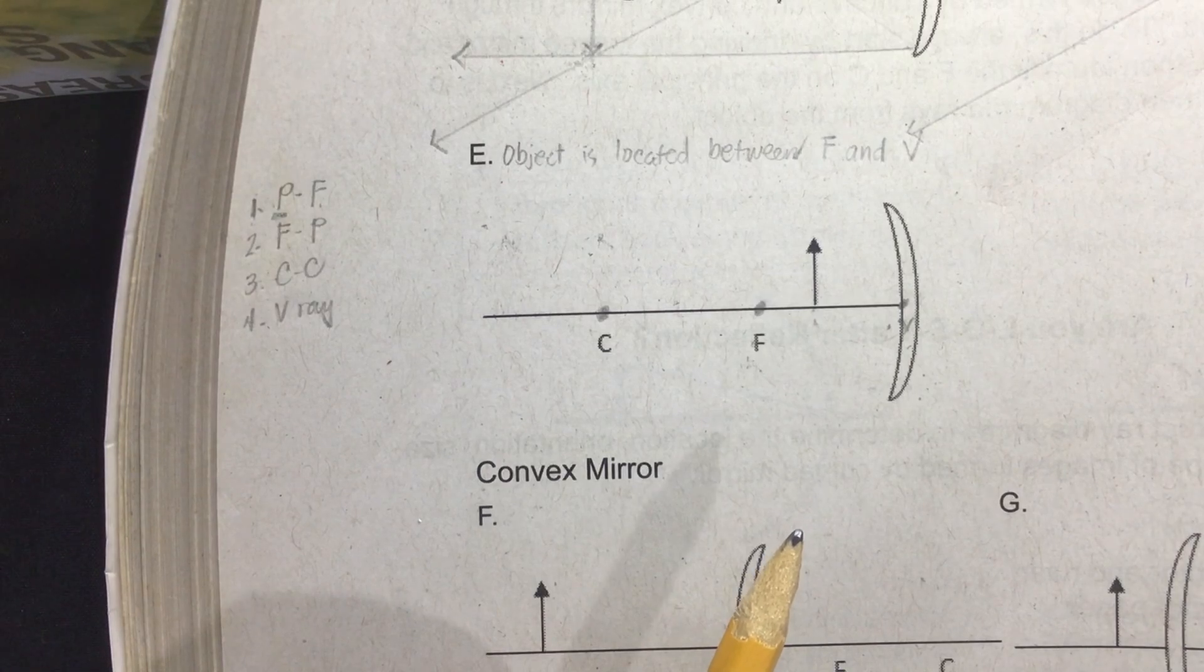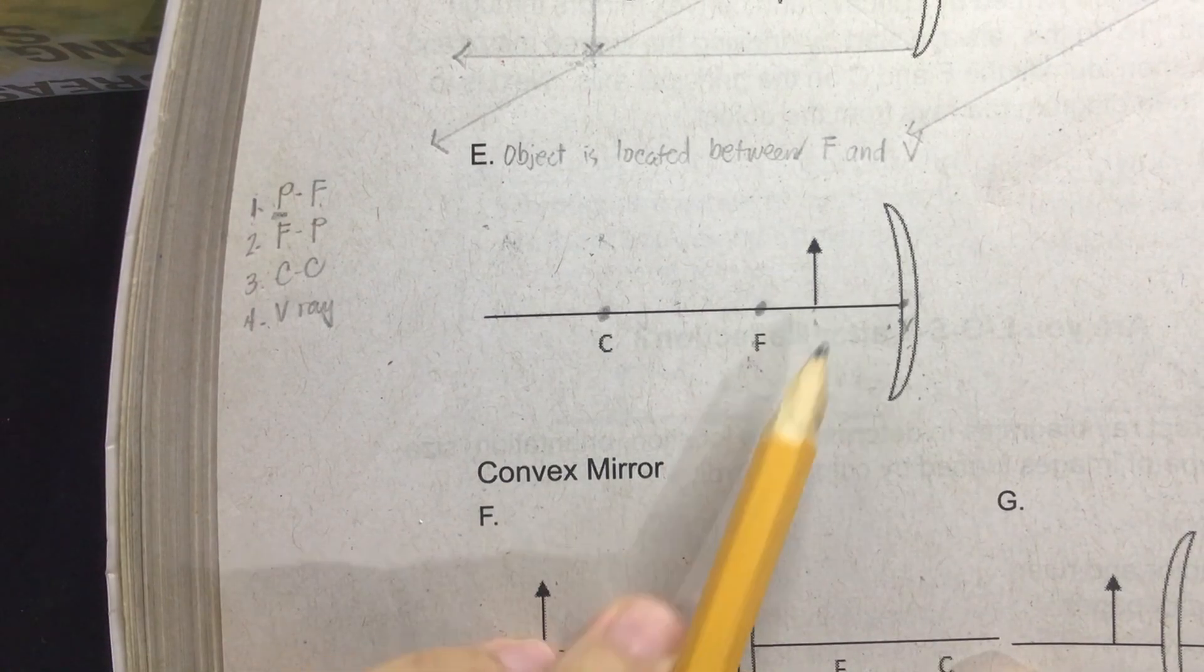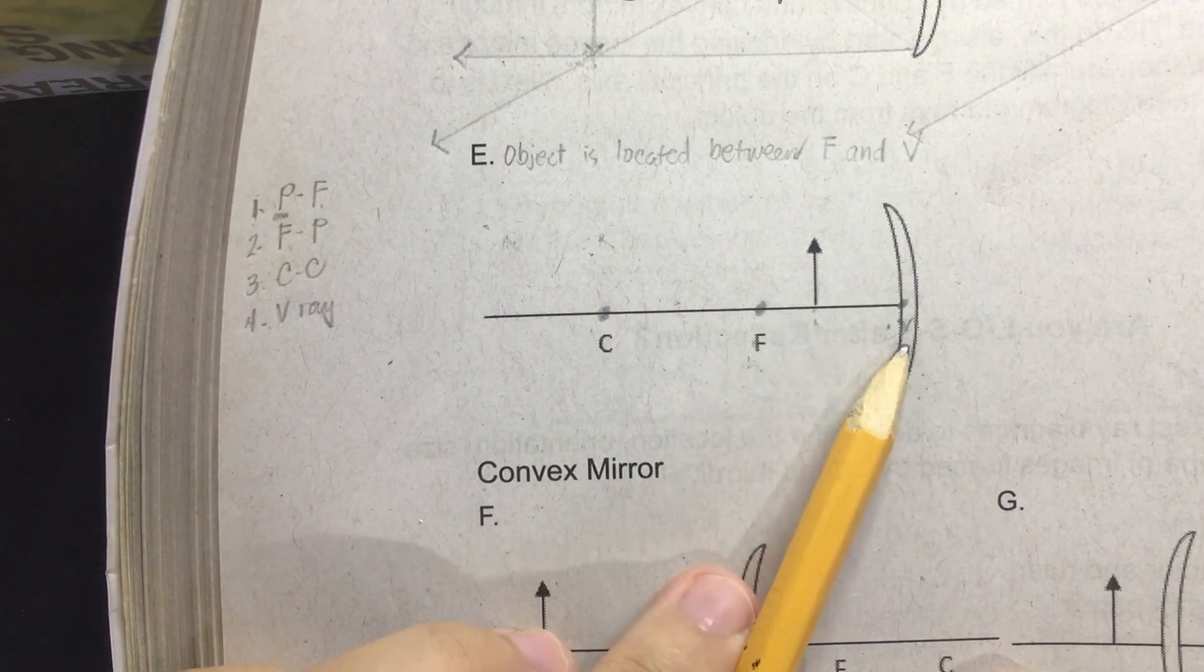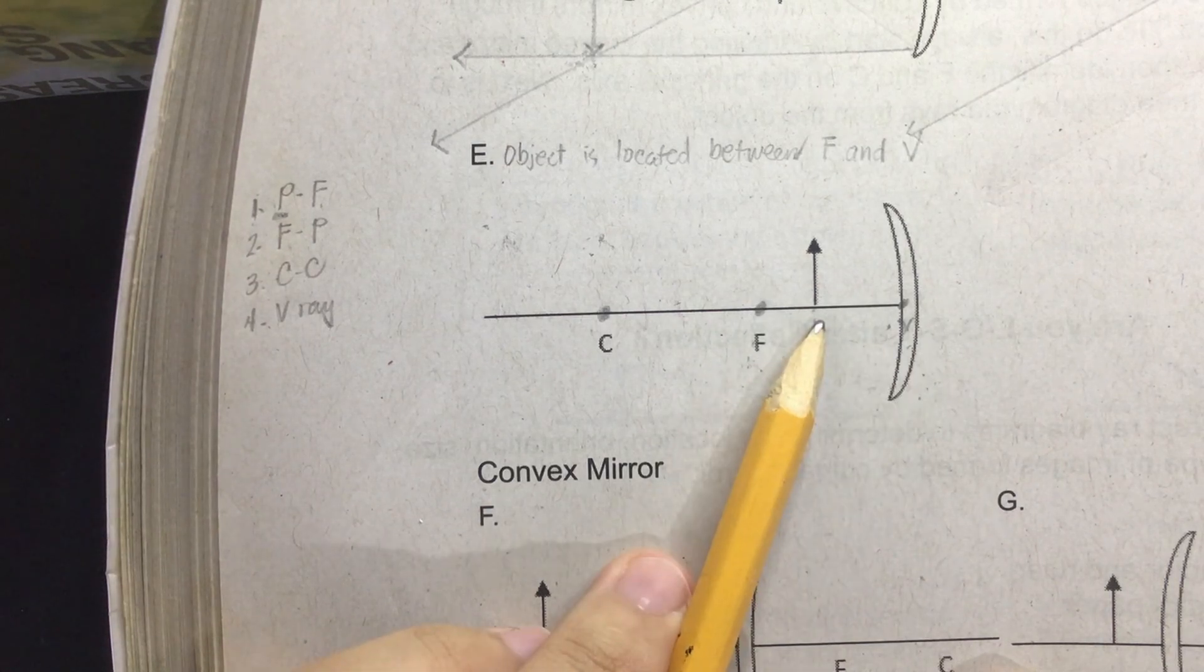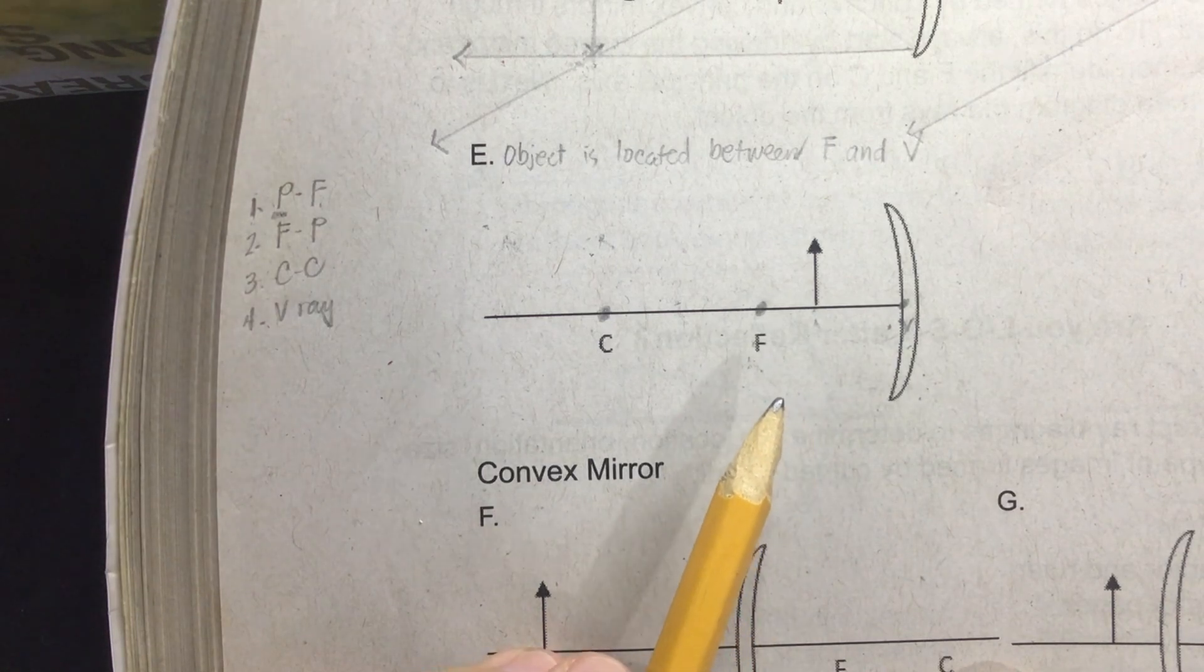We are now on the fifth diagram and this time the object is located between the focal point and the vertex. The object is close to the concave mirror. Where do you think the image will be located this time? Let's find out.